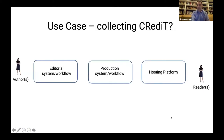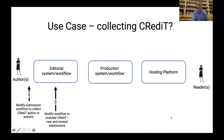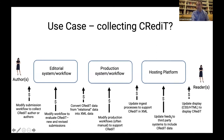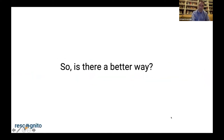If we take the use case of collecting credit, authors have to be solicited for the credit information, it has to be reviewed in editorial workflow, converted from relational data to XML, put through production processes, transferred to hosting platforms, and then out to readers in formats which are suboptimal. So is there a better way?